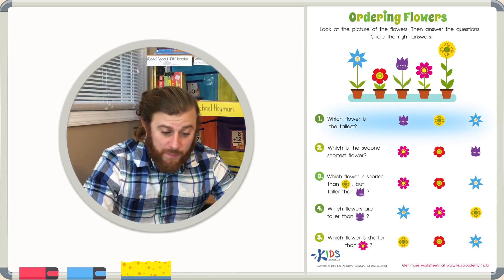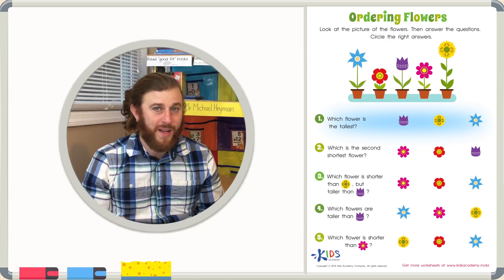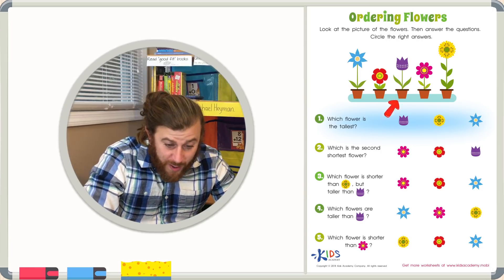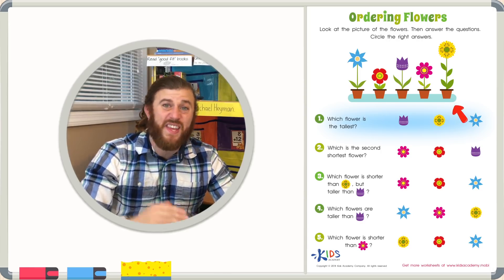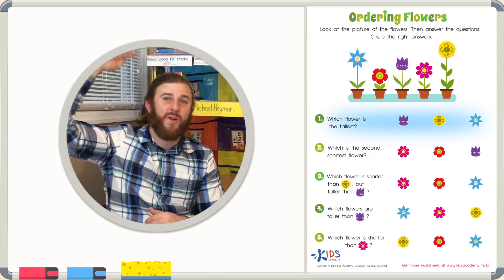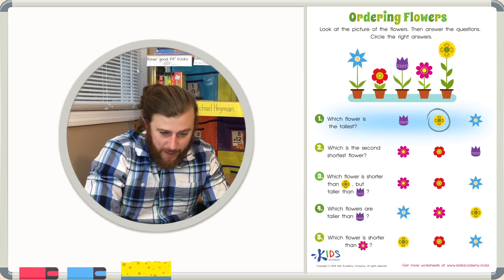Number one. Which flower is the tallest? Well, that's easy. Let's just look at the picture. If we look at all of our flowers, we can see that the yellow flower is the tallest. It is bigger than all the other flowers. So let's go ahead and circle the yellow flower.